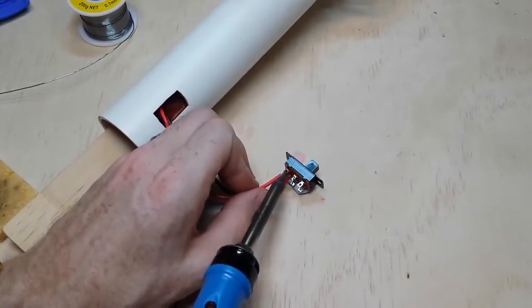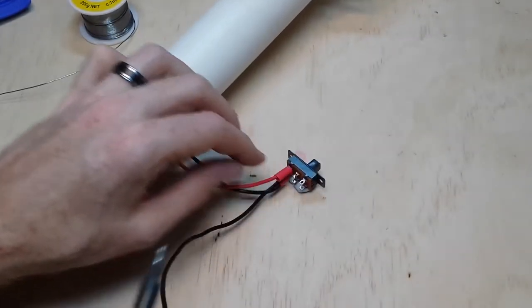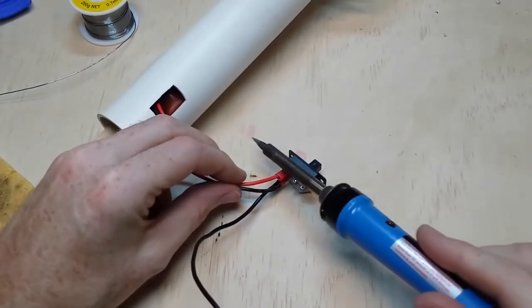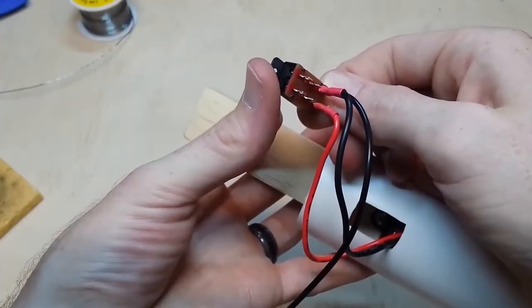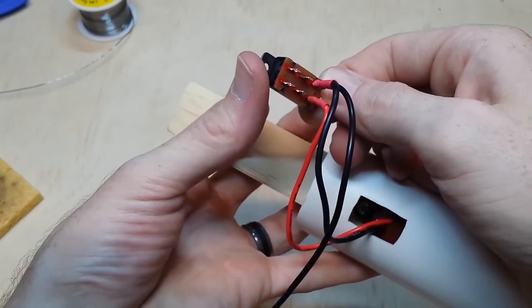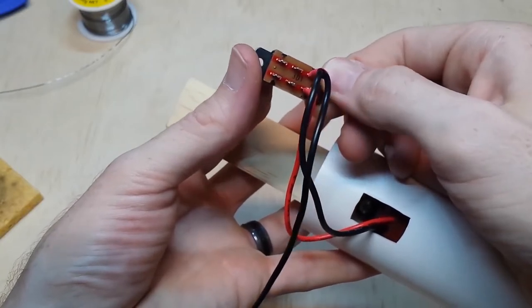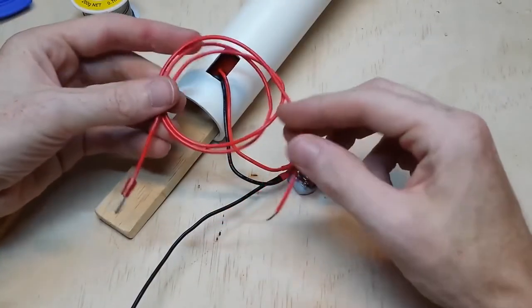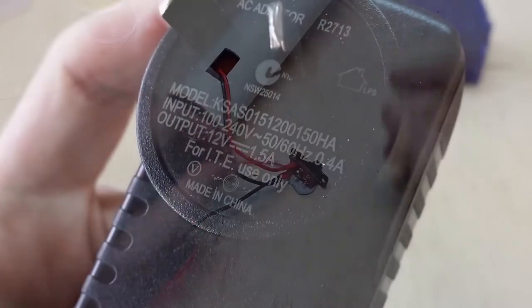Before soldering to the switch, I tin the legs of the switch and connect the two black wires to the bottom corner of the switch. Then slide the shrink tube over the top and apply heat so it grips.